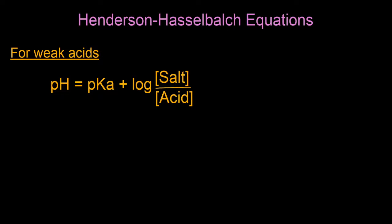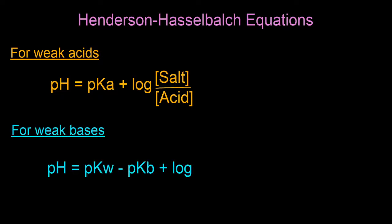The other set is based on the weak base system, where the equation is: pH = pKw − pKb + log([base] / [salt]). Here, pKw is the negative log of the ionization constant for water. So your pH equals pKw minus pKb plus the log of the concentration of the base over the concentration of the salt. These two equations are very important — you want to be able to use them.